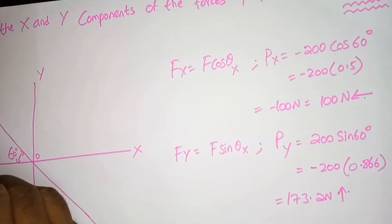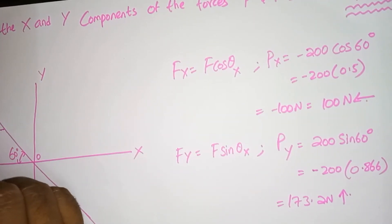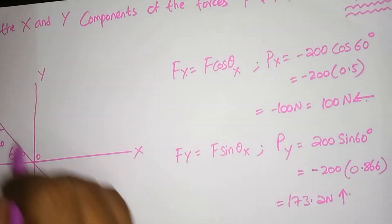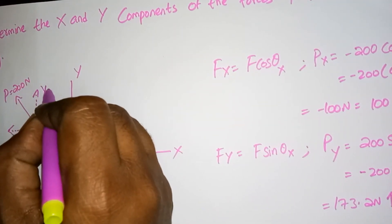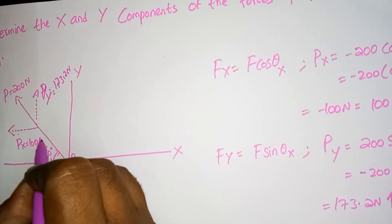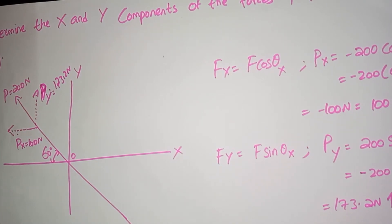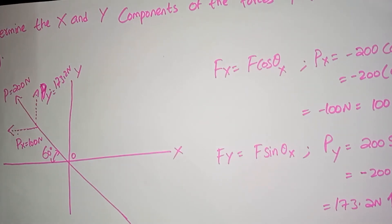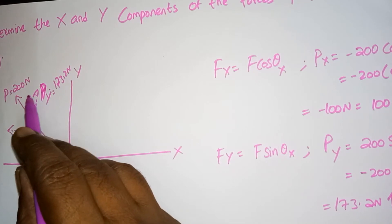We will plot these terms on the diagram. The direction is shown here with a dotted line. Px is 100 Newtons in the horizontal direction, and Py is 173.2 Newtons in the upward direction. The components of P could also be found by mentally visualizing the triangle formed by P and its components, as shown. We can apply the sine rule to this triangle.